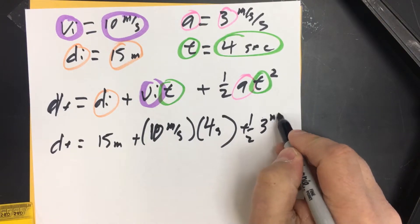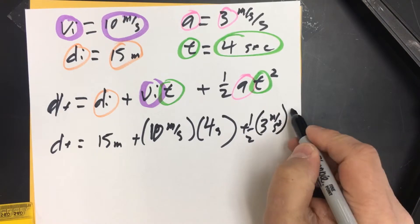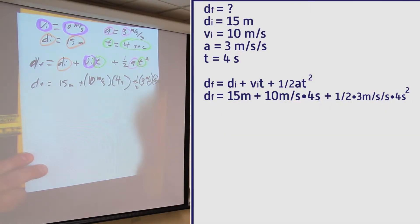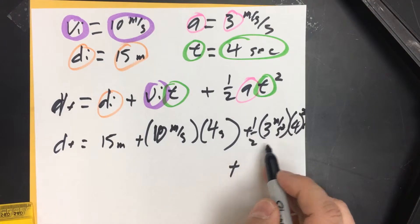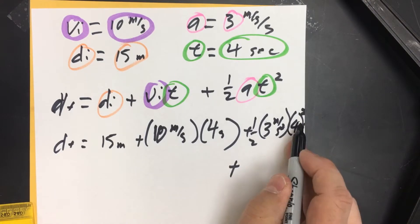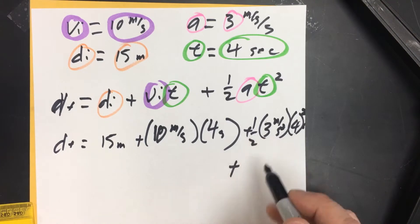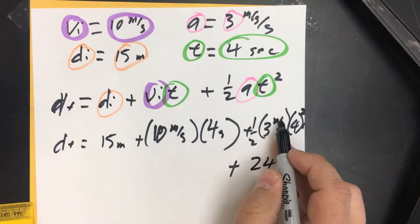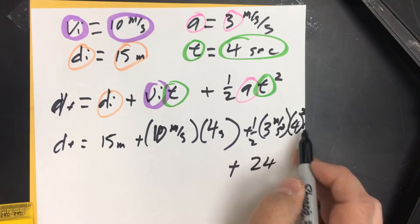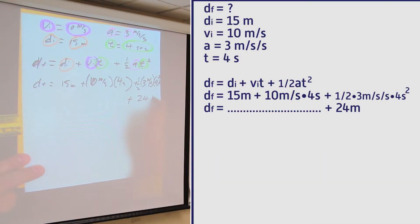Plus one half, 3 meters per second squared, times 4 seconds. The seconds are going to cancel and it's 4 seconds squared. The seconds are going to cancel. Because this is such a disaster, I'm going to go ahead and do this one out. One half, 4 squared is 16, 16 times a half is 8, 8 times 3 is 24. The meters are not canceled, the seconds squared cancels out, so this ends up being 24 meters.